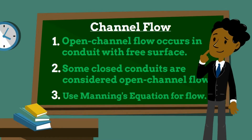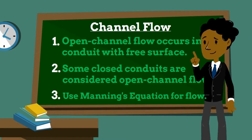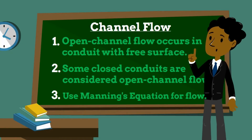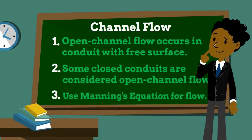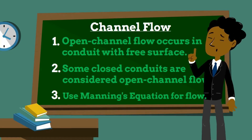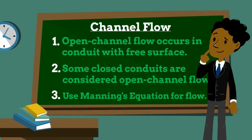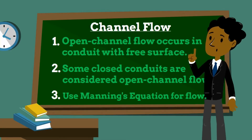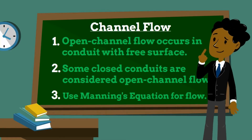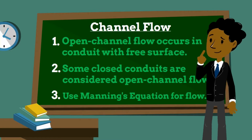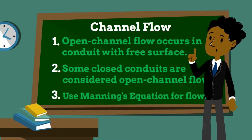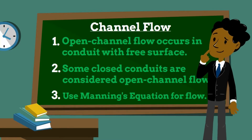The Manning equation is an empirical equation for uniform open channel flow. It can be used for water flow rate calculations in either man-made or natural open channels. Water flow calculations with the Manning equation use the channel slope, hydraulic radius, and Manning roughness coefficient. When needed, the discharge formula — flow equals area times velocity — can be used to manipulate this equation.